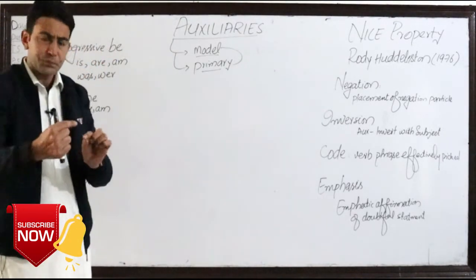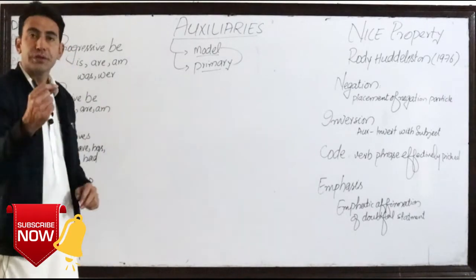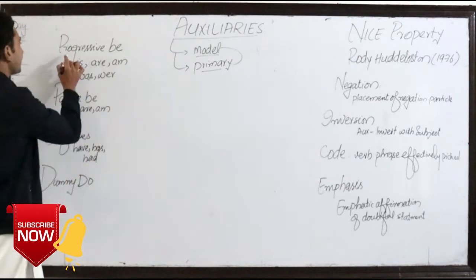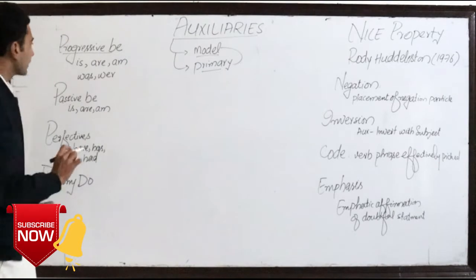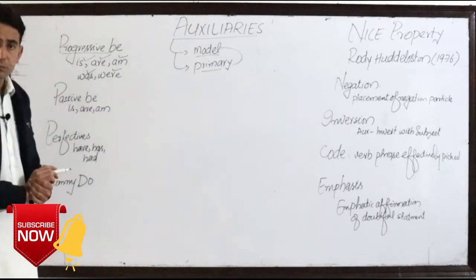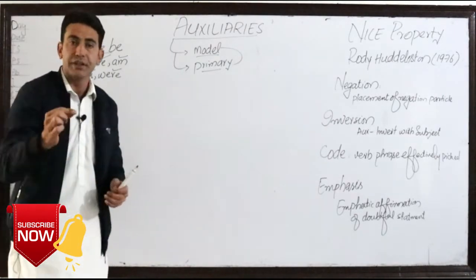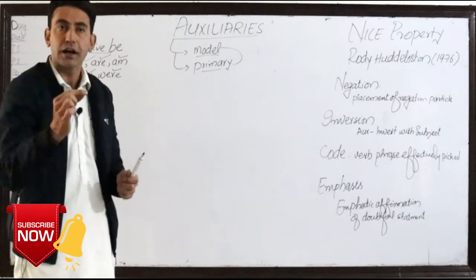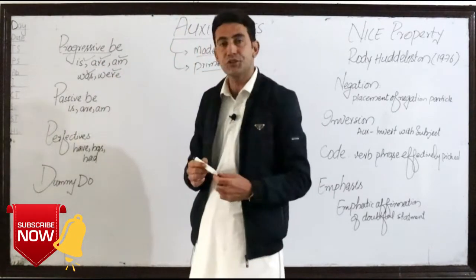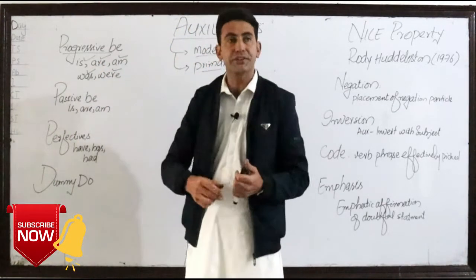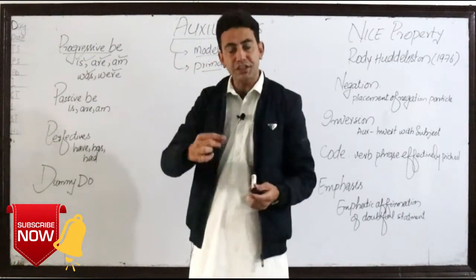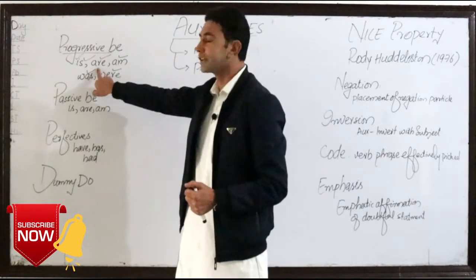We have divided these auxiliaries into different groups or categories. For example, we have progressive BE. Progressive BE is comprised of is, are, am, was, and were. The use of auxiliaries is conjugated according to the subject — if the subject is singular then we use 'is', and if the subject is plural then we prefer 'are'.